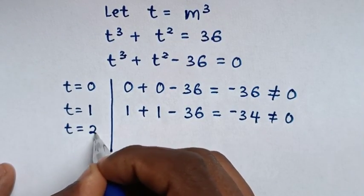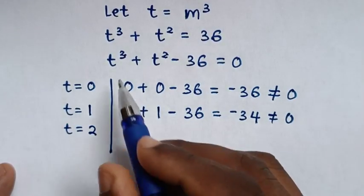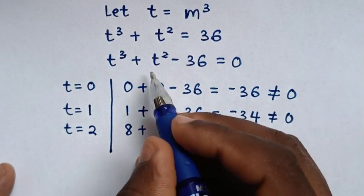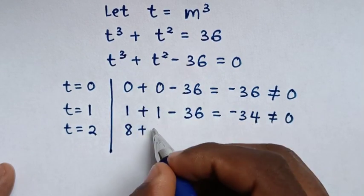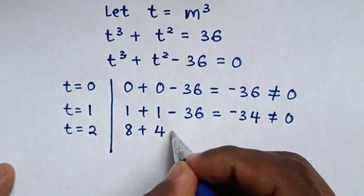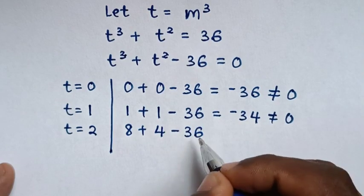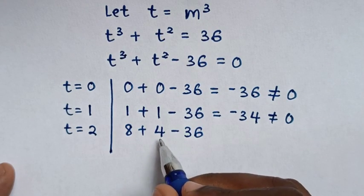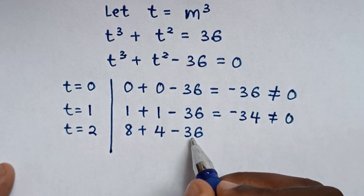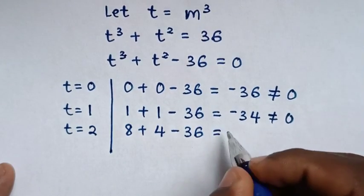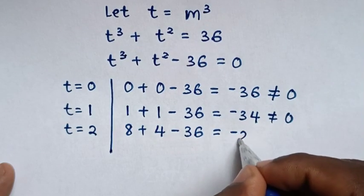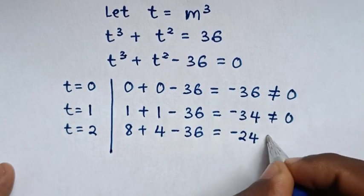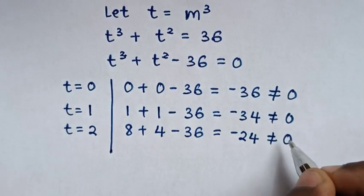Then we will check with t is equal to 2: 2 power 3 is 8 plus 2 power 2 is 4 minus 36. 8 plus 4 is 12, 12 minus 36 is equal to negative 24, which is not equal to 0.